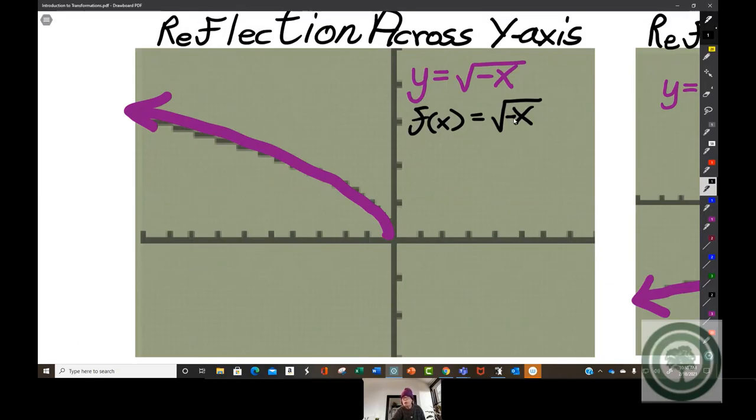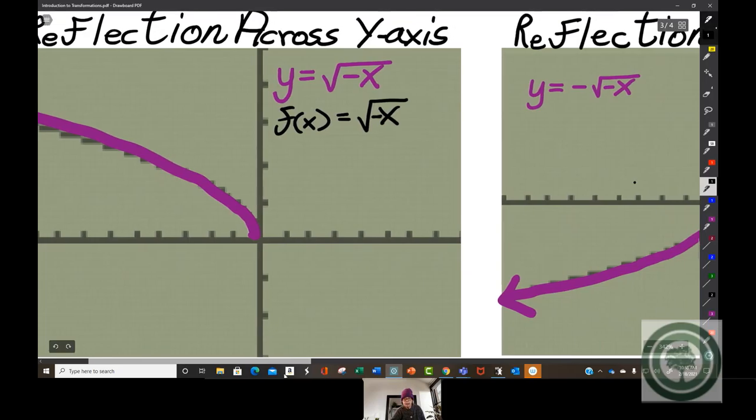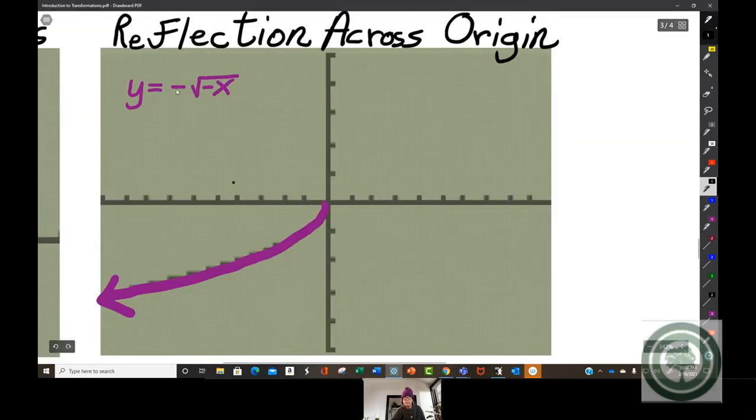Now, watch what happens if you kind of get a wild hair and decide, huh, what would happen if I put a negative on the outside and a negative on the inside? Well, that's called a reflection across the origin. Your original graph was here. The mirror image, the diagonal image, but it's a mirror image across the origin, is that.